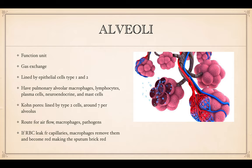The alveoli are lined by epithelial cells type 1 and type 2. Supplying the alveoli are capillaries, and those have the pulmonary alveolar macrophages. Those are what turn the lungs black once they've ingested particulates and other particles. There are also lymphocytes, plasma cells, neuroendocrine, and mast cells. Mast cells play a role in histamine reactions, so they play a role in edema and allergic reactions.